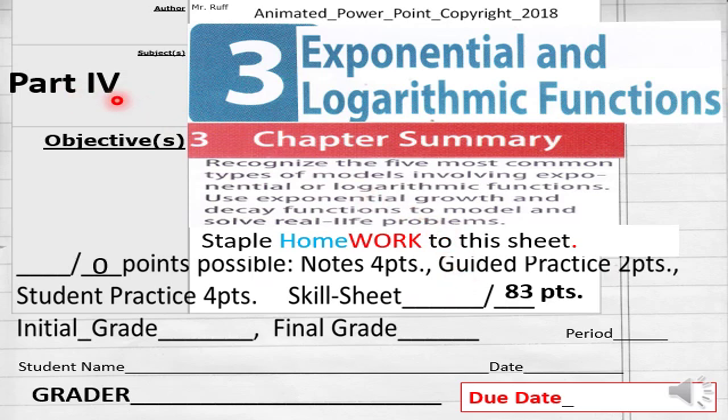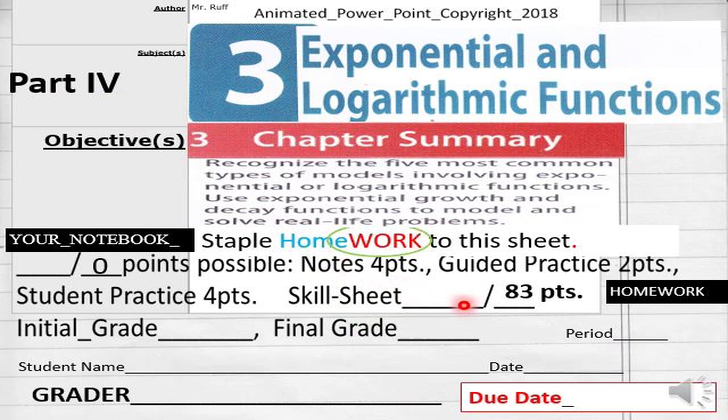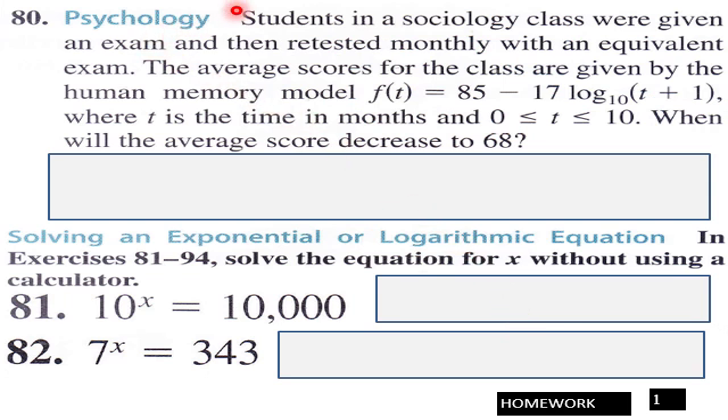Part 4 of our homework is an 83-point assignment. We start out with a word problem. Go read through that.